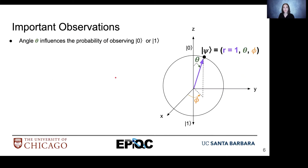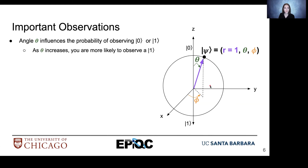Some important observations. Our angle theta influences the probability of observing ket0 or ket1. If we are at the equator of the Bloch sphere — so a theta value of π/2 — that results in a 50% chance of observing ket0 and a 50% chance of observing ket1. As theta increases all the way to π, our chances of observing a 1 become larger.